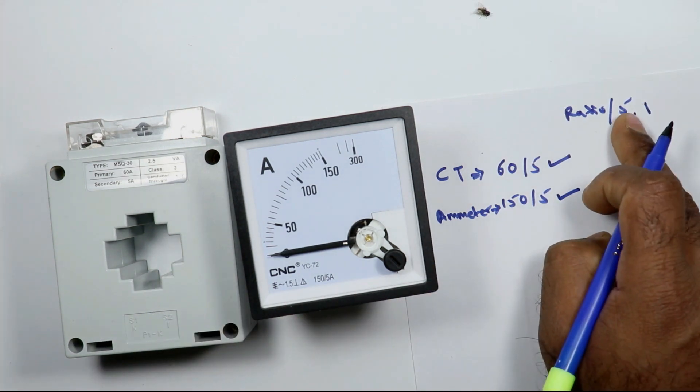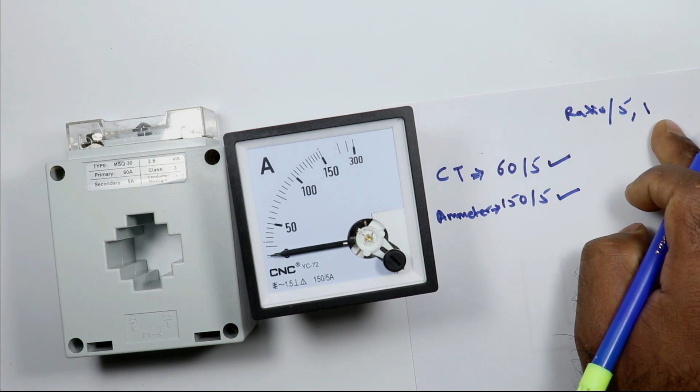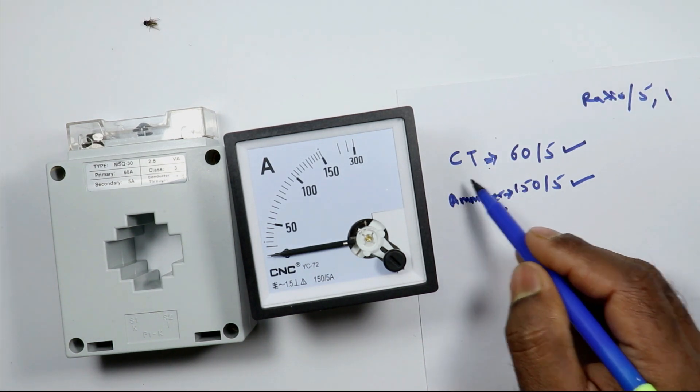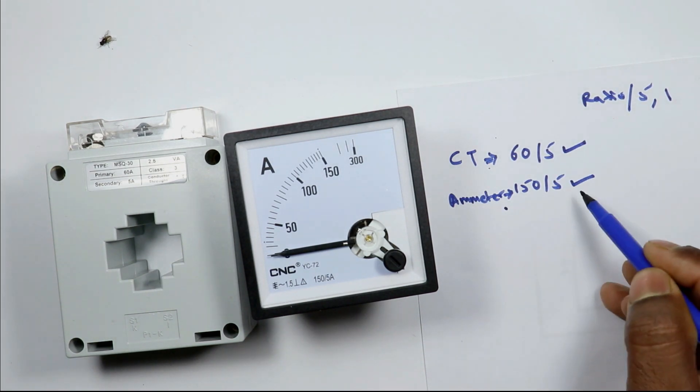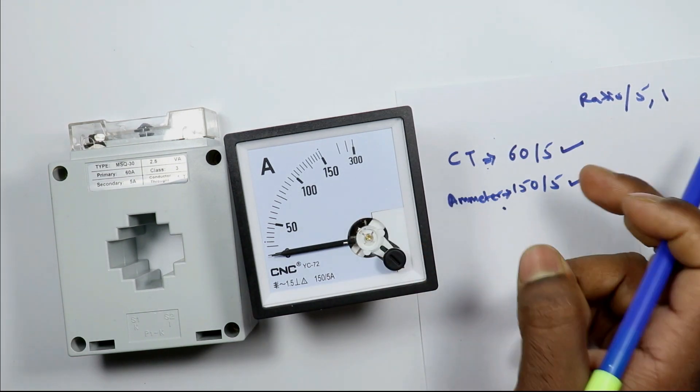Ratio of CT in output is 5, so for ammeter also it should be 5, not 1. You can see the ratio for CT is 5 and for ammeter also it is 5. So we can do the scaling for ammeter.